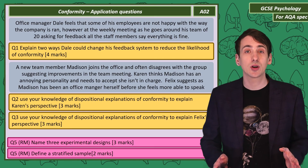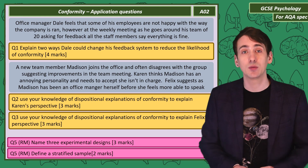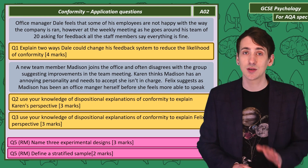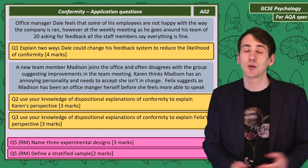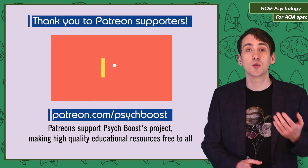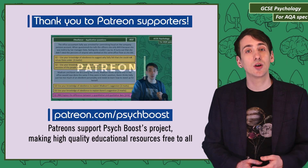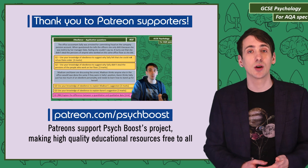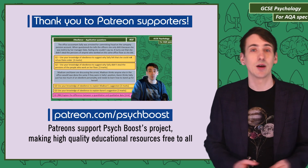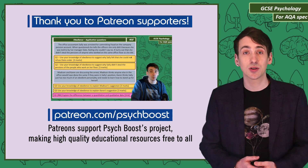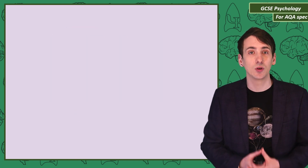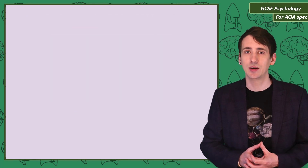Now that we've covered the content, you need to be able to use all that information to actually answer questions. Here are 5 questions to test your skills — pause the video and give them a go. For those who support on Patreon, there's an additional video showing how to answer these properly. For everybody else, thanks for watching, liking, and subscribing, and I'll see you in the next video on Social Influence: Obedience.